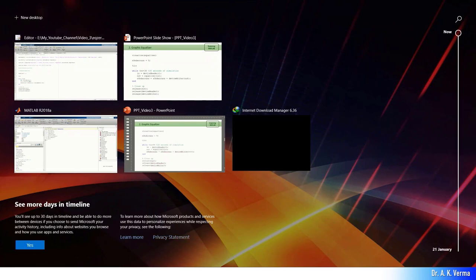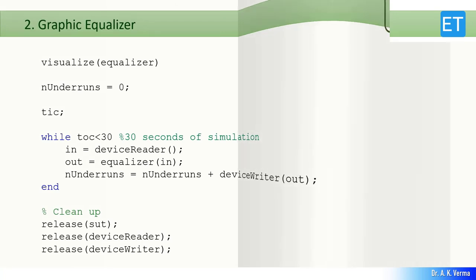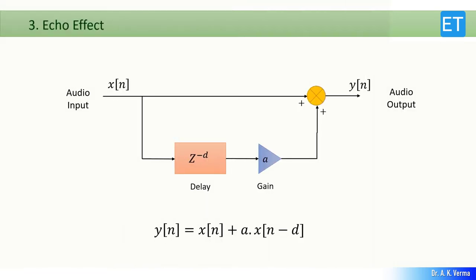Let me come to the next effect, which is the echo. Echo is a very famous and popular effect in audio signals. Whenever you speak into a mic or sing a song, echo is often added to give a good effect. This is the scheme — the difference equation shows that output Y(n) equals input plus some gain A multiplied with the delayed input. So the input is added with its delayed version, and the gain specifies how much depth of effect you require. In MATLAB, I have implemented this difference equation.